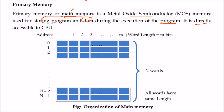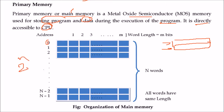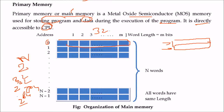Primary memory is directly accessible to the CPU. The organization of main memory has different words addressed from 0 to n-1, so 2 to the power n addressing can be done. For a 32-bit processor, 2 to the power 32 addressing can be done; for 64-bit, 2 to the power 64. All words have the same word length — 32 bits, 64 bits, or 128 bits.